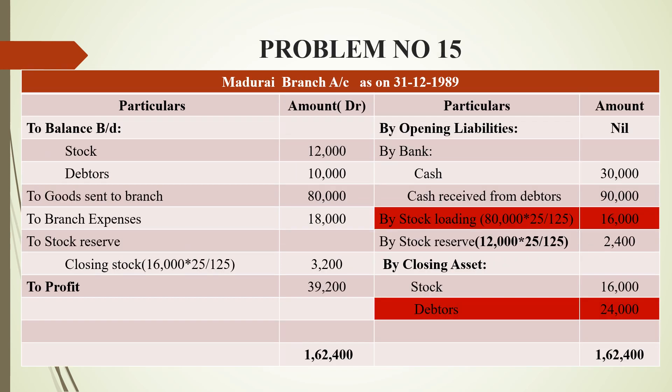There is a difference in this problem that we need to highlight and implement. In the branch account, we have opening assets and closing liabilities, and opening liabilities and closing assets. On the debit side, the opening asset — stock and debtors — is 12,000 and 10,000 rupees. Goods sent to branch is 80,000 rupees, and branch expenses are 18,000 rupees. We also include stock reserve, as goods are invoiced at invoice price.